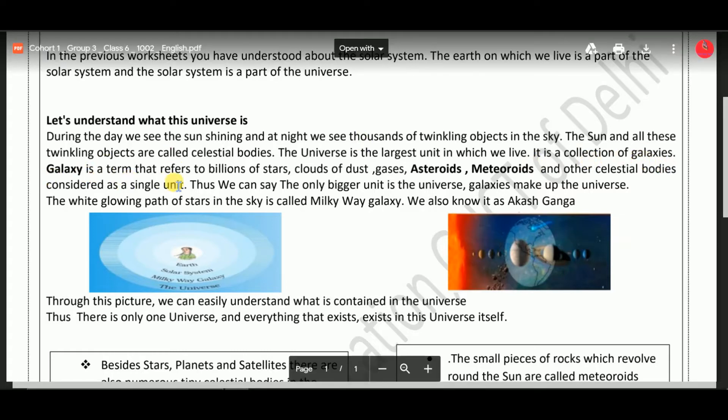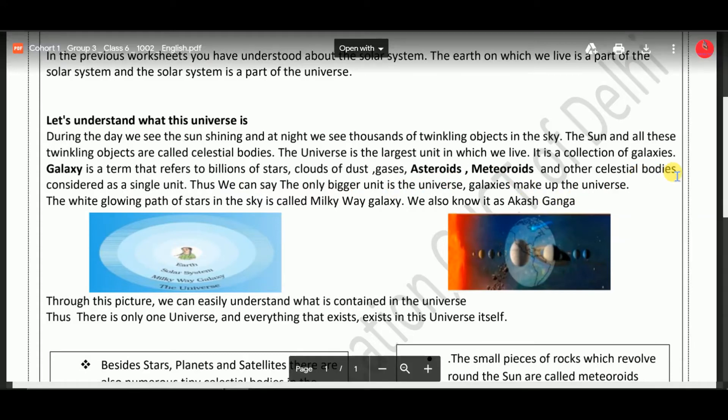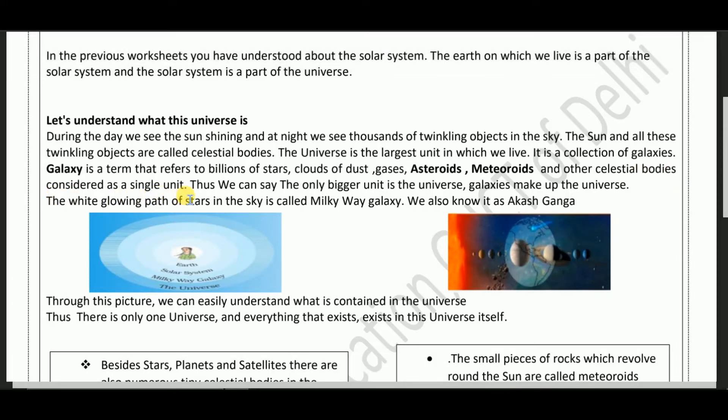Galaxy is a term that refers to billions of stars, clouds of dust, gases, asteroids, meteoroids and other celestial bodies considered as a single unit. We also know it as Akash Ganga.